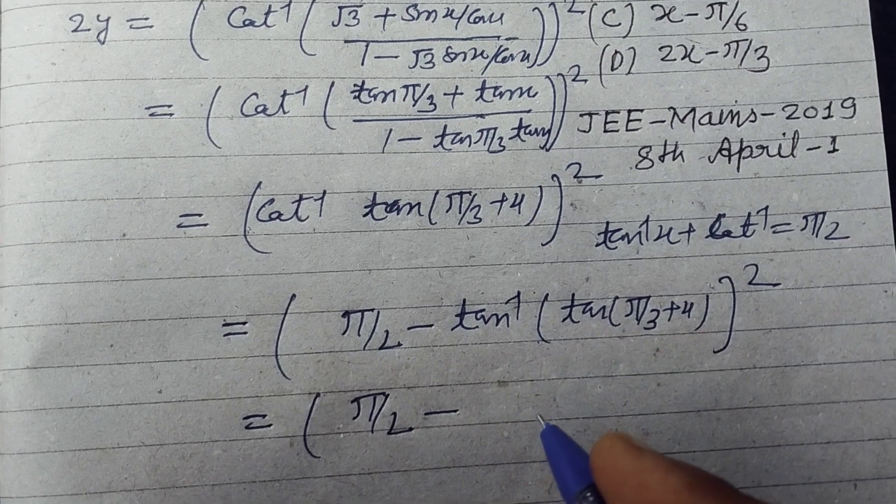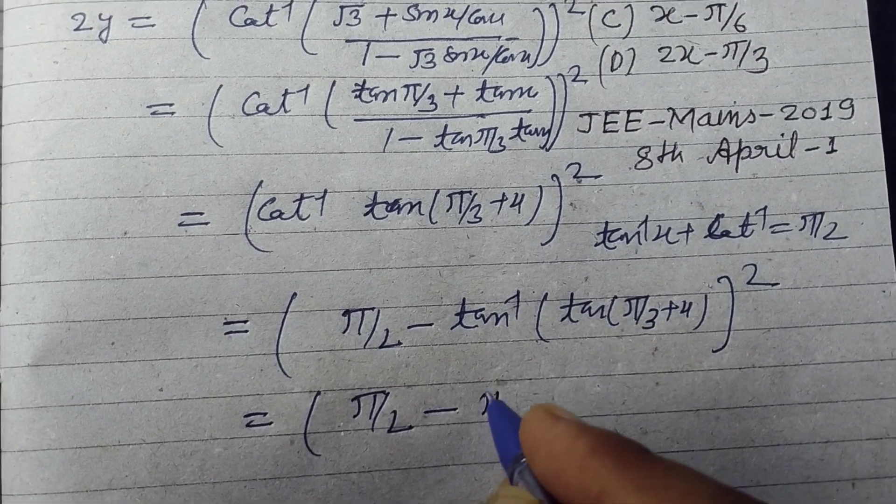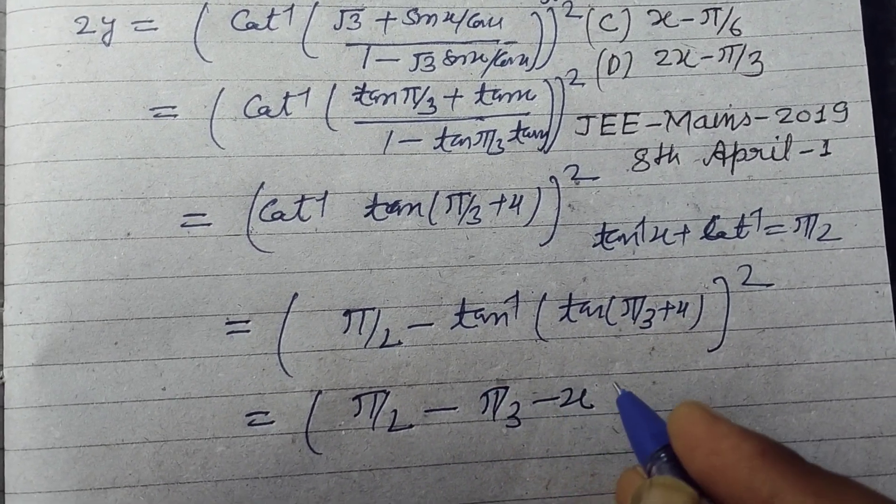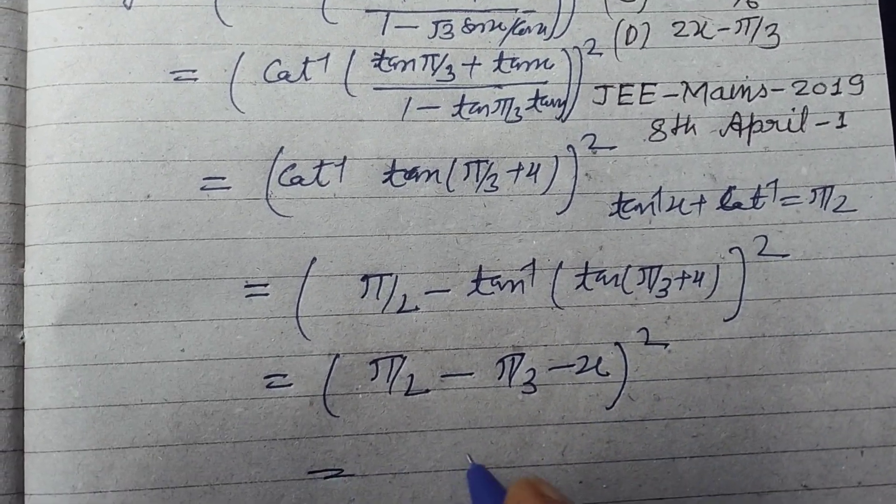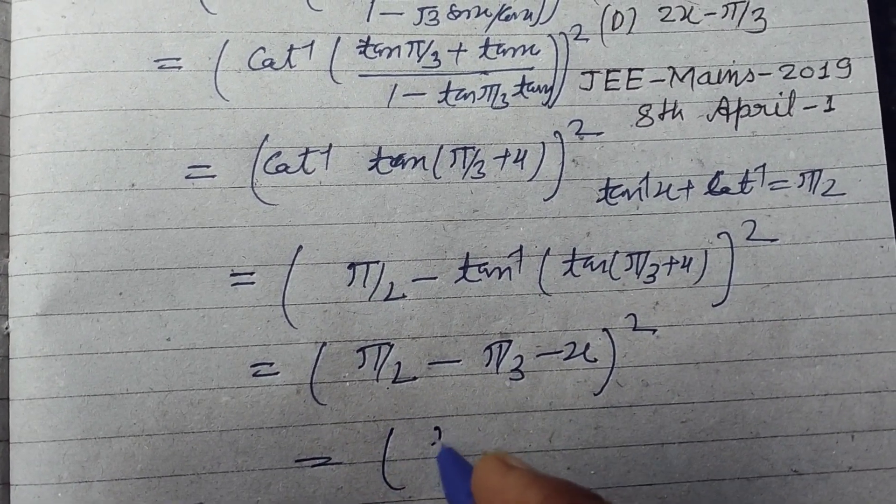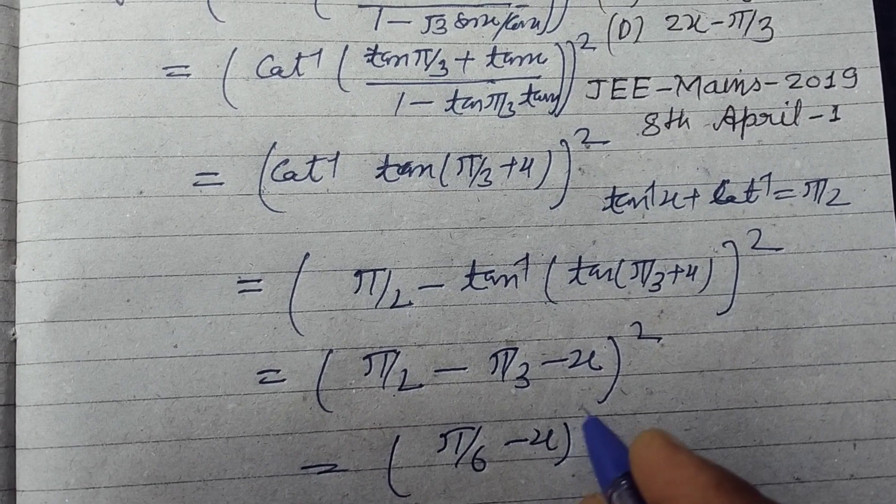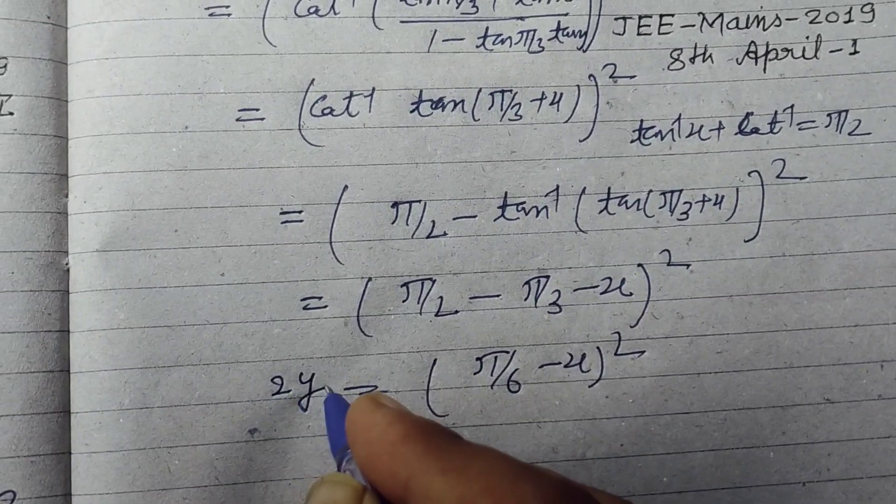π/2 minus, the tan and tan inverse cancel, we get π/3 plus x whole square. This is π/2 minus π/3, which is π/6 minus 2x.